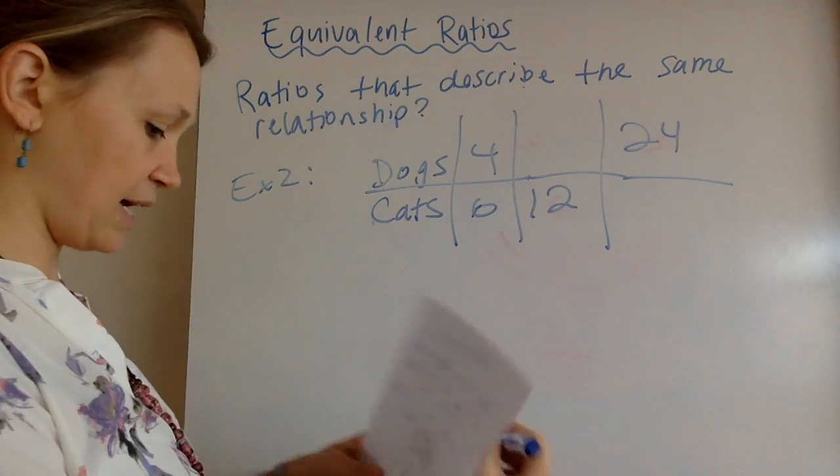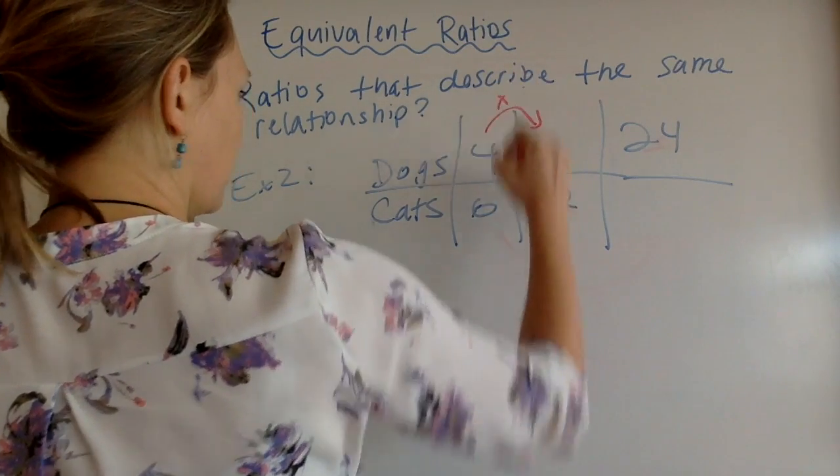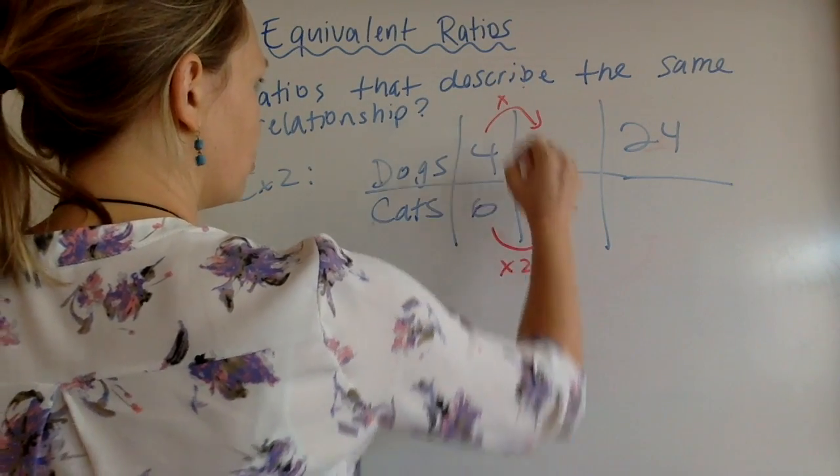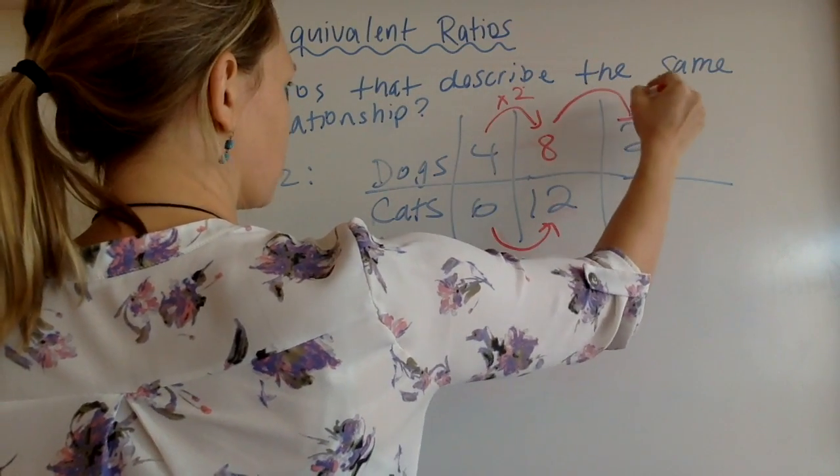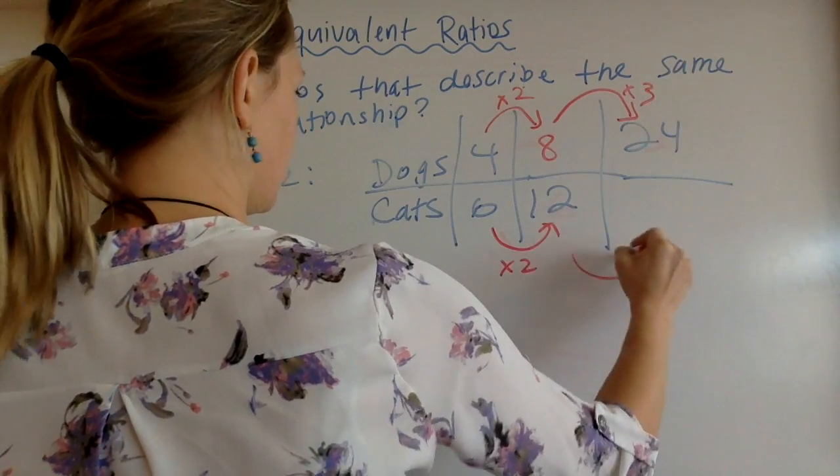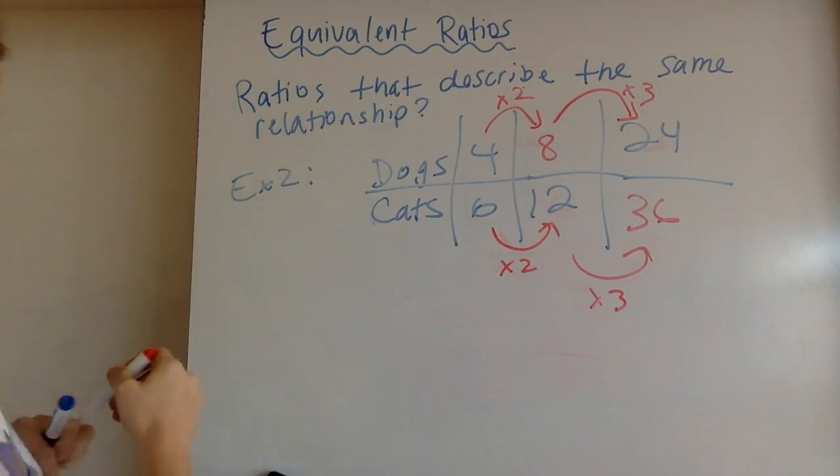All right, if you're just coming back, I'm going to go ahead and give you the answer. Hopefully, you notice that you can multiply by two and get eight. And then eight times what equals 24, times three, and times three equals 36. I hope that wasn't too bad for you.